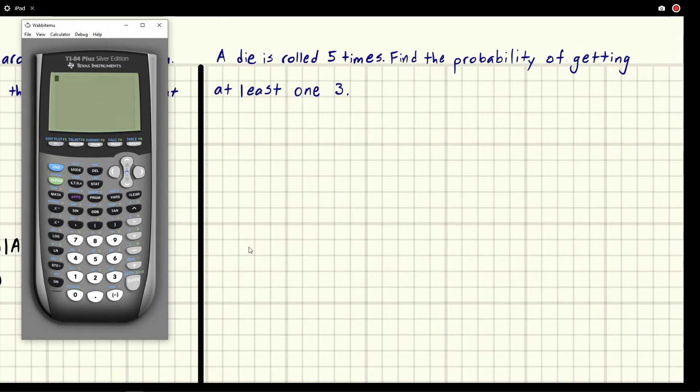Eric Burgess here. A die is rolled five times. Find the probability of getting at least one three.